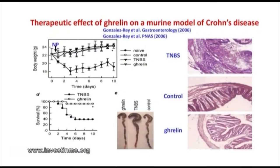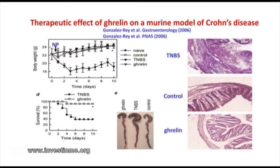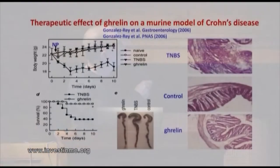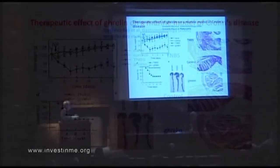Moving to a model with more autoimmune and inflammatory components — a model of Crohn's disease induced by injection of TNBS — you can see a decrease in body weight caused by severe colitis. The majority of animals die from colitis due to intestinal perforation, and there is massive inflammation in the colon. Injection of the neuropeptide — in this case ghrelin, though similar results are seen with others — prevents body weight loss, prevents mortality, and reduces gut inflammation and mucosal destruction.